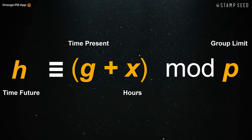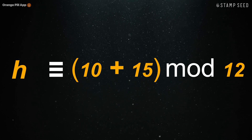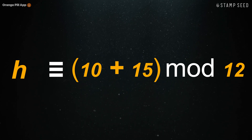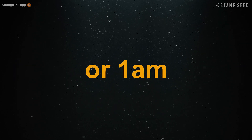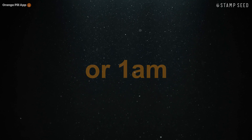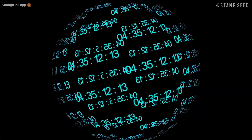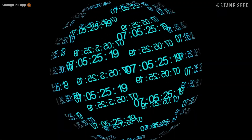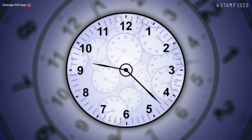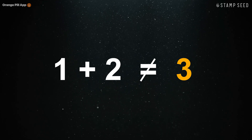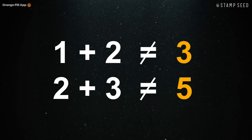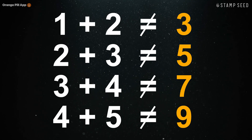For example, if it is 10 a.m. and you have 15 hours, you cycle around the clock until you end up at 1 a.m. This is why it's called finite field math — a clock operates in a finite, limited field of 12 hours. What this means is that addition, subtraction, multiplication, and division produce different answers than the arithmetic math that we're used to.